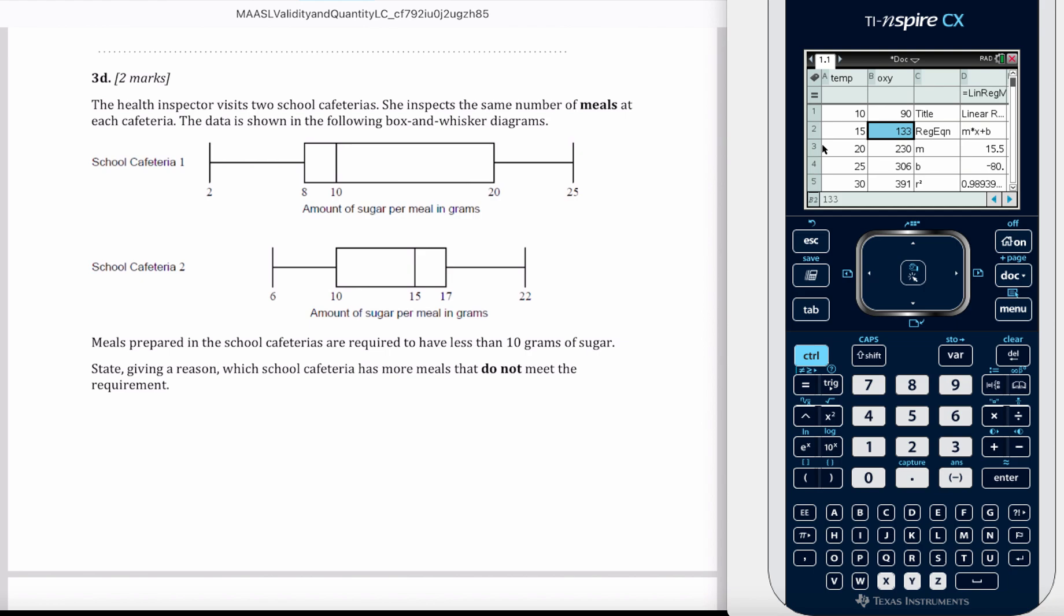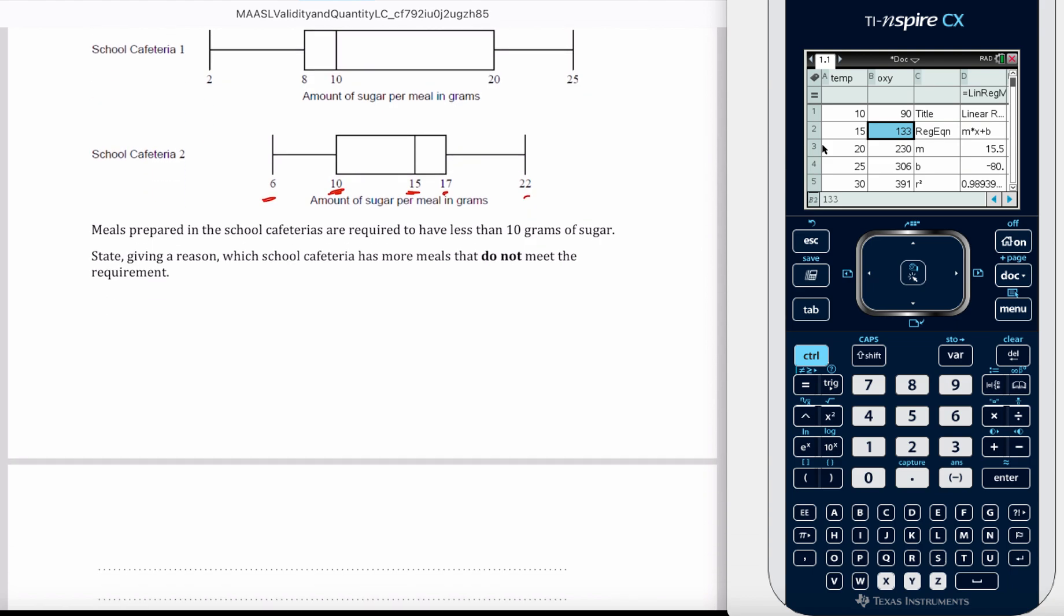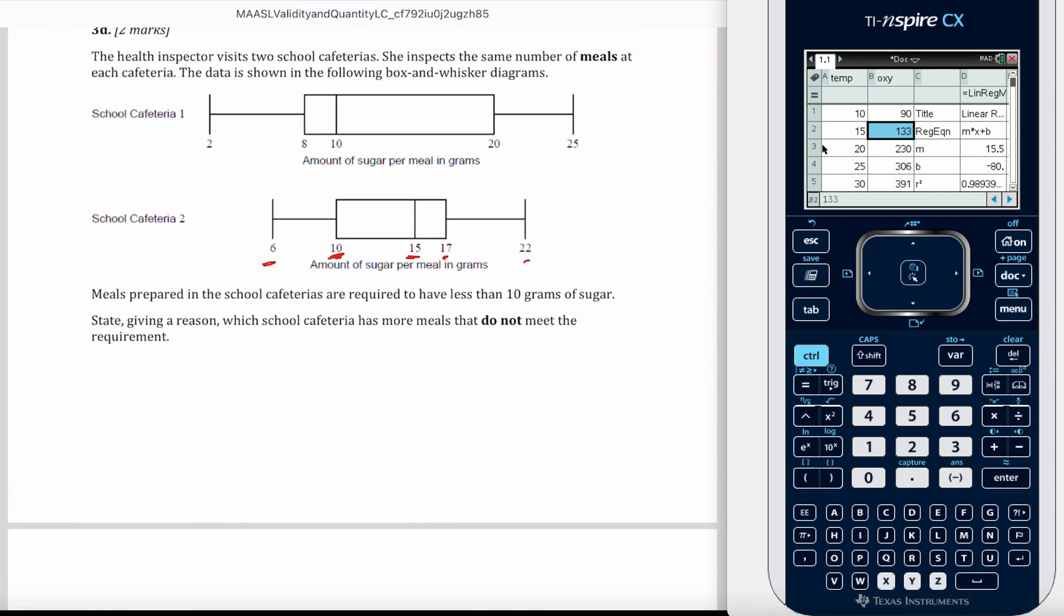Okay, so both of these represent the same amount. And between the lowest value and the lower quartile, there's 25% of data. Between the lower quartile and the median, 25%, et cetera. So for this data, I know there's a bit to write on there, but we'll write it here. We need the right reason. So cafeteria school 2 is worst because 75% of the meals contain 10 grams or more.